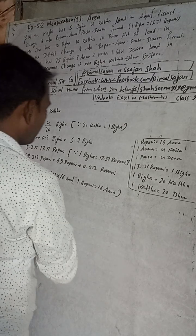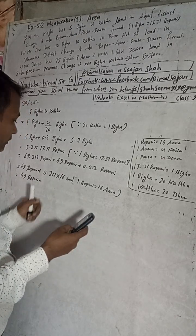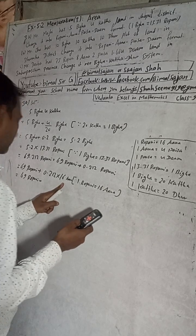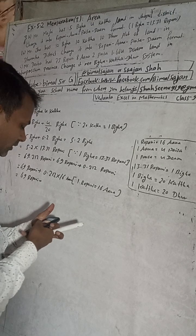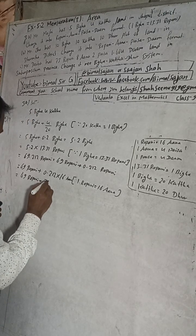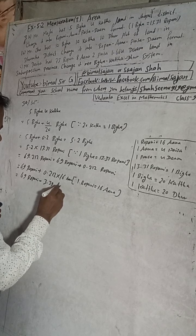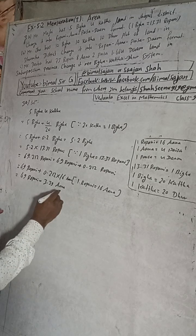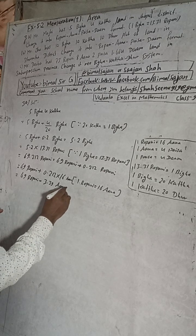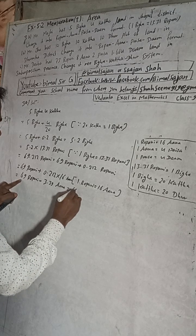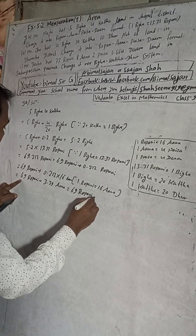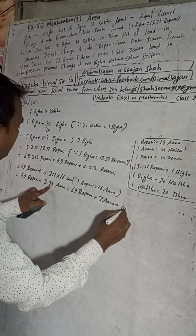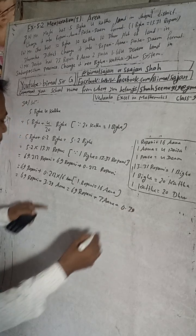0.212 into 16 gives us 3.392. This is in ana. So we now have 69 ropani plus 3 ana, and the remaining 0.392 ana needs to be converted further.